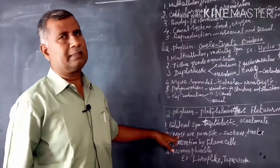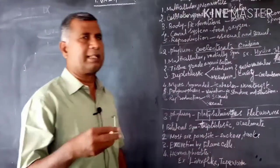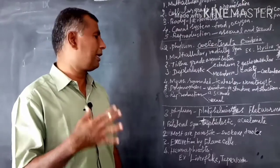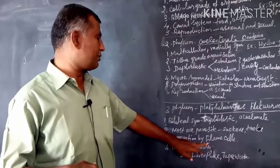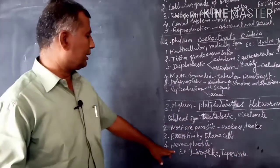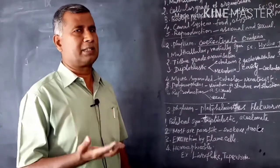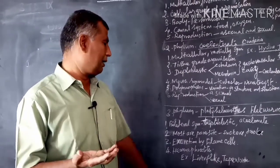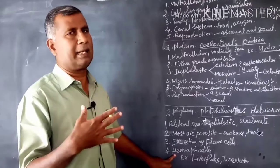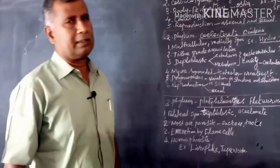Most are parasites. There is no well-developed digestive system because they have suckers and hooks, and mostly live in intestines. They absorb already digested food, that is why they have no well-developed digestive system. Excretion is by specialized cells called flame cells. Mostly these animals are hermaphrodite – both male and female sexual organs are present in the same animal. Reproduction takes place within the animal by itself. Examples: liver fluke, tapeworm.